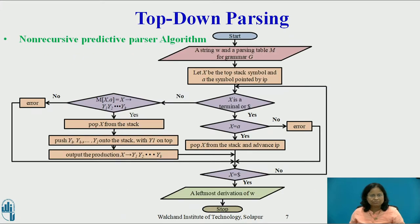Non-recursive predictive parser algorithm: These four possible actions are explained in the following flowchart. Input to the algorithm: a string W and a parsing table M for grammar G. Initially, the parser is in the configuration with W$ in the input buffer and the start symbol S of grammar G on top of the stack above $. The flowchart uses the predictive parsing table M to produce a predictive parser for the input.